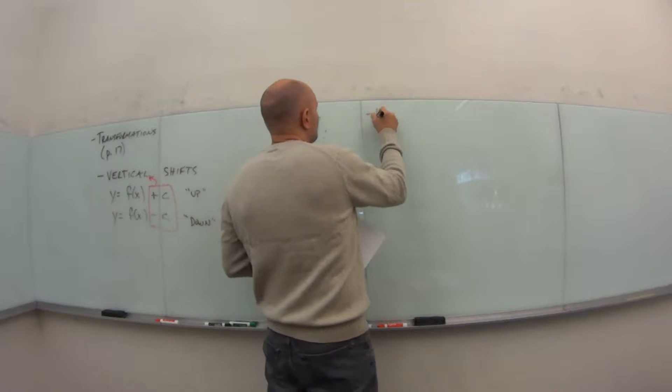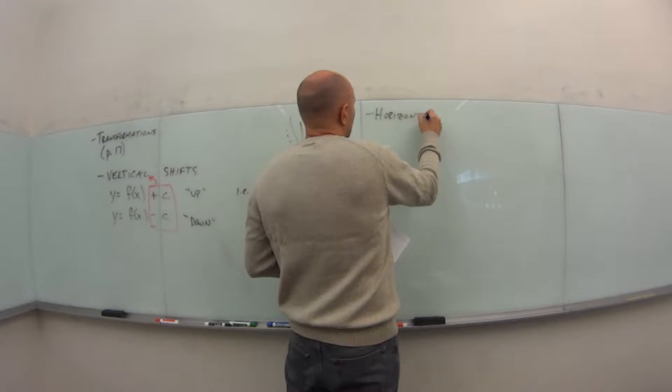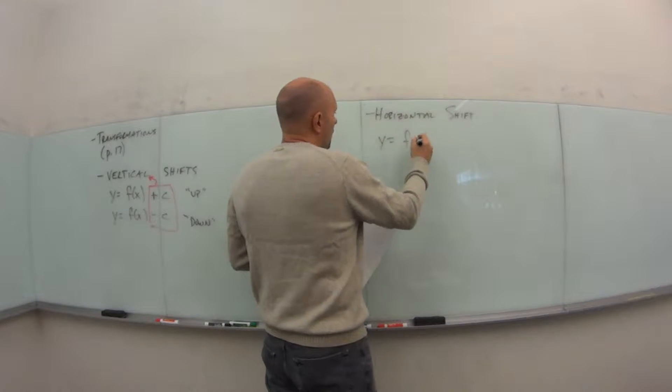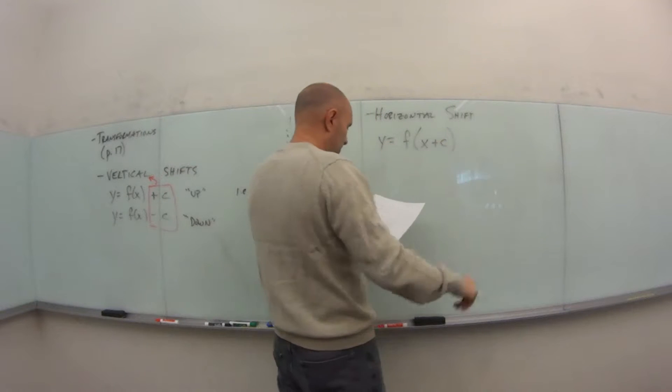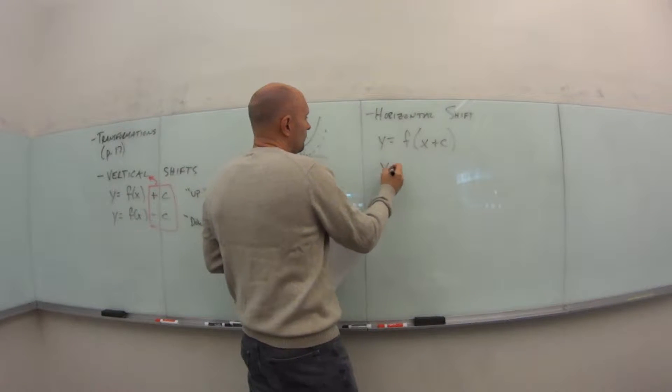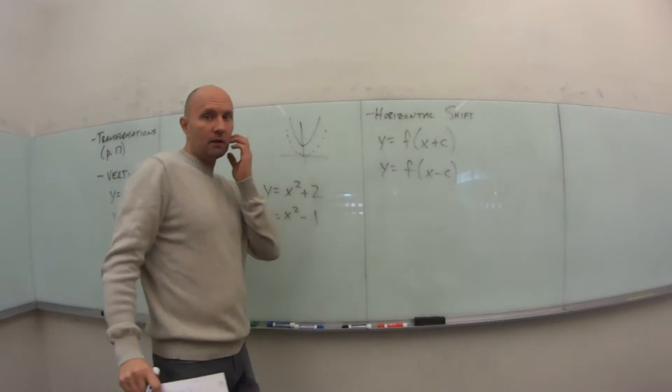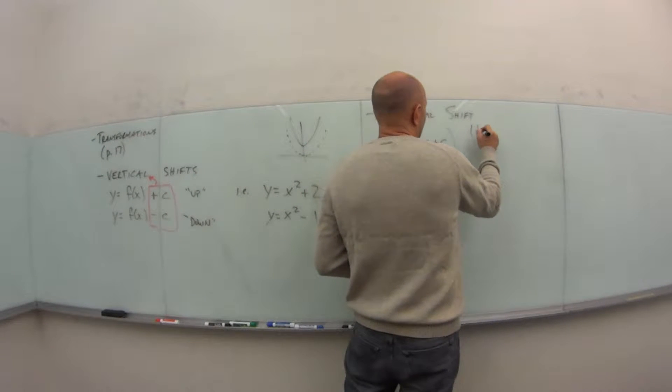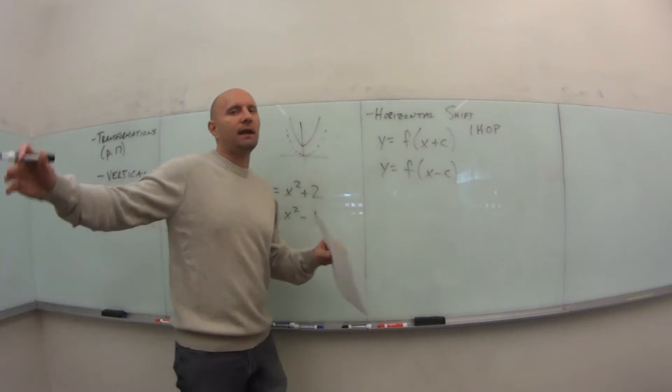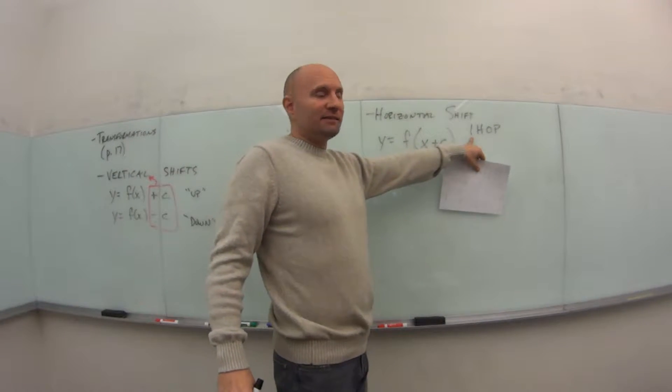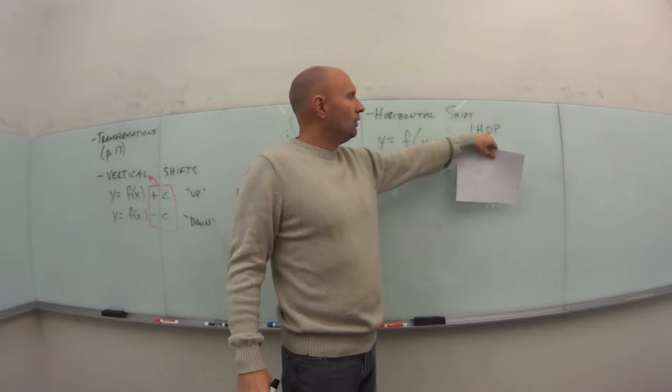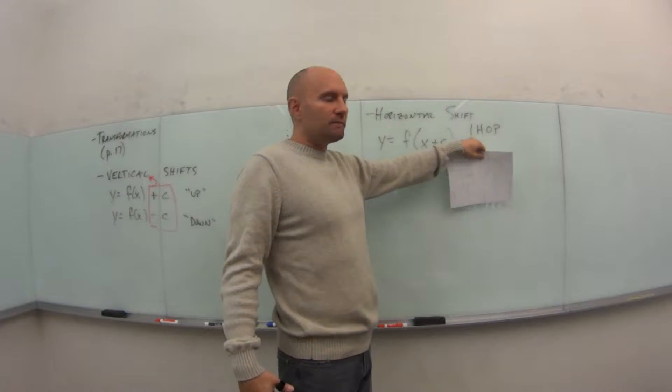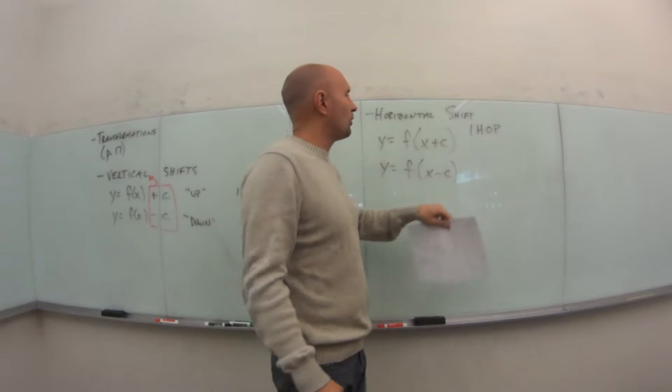The other is the horizontal shift. In this situation, we're going to have y equals f of x plus c, or y equals f of x minus c. So now this shift has moved inside the function itself. And remember the acronym, IHOP. Pancake house, not in this case. I, inside, H, horizontal, OP, opposite.